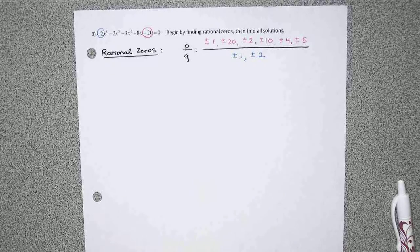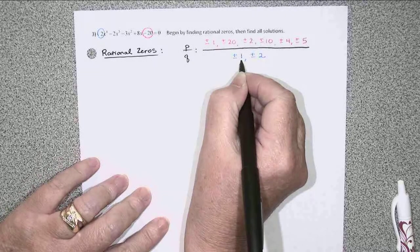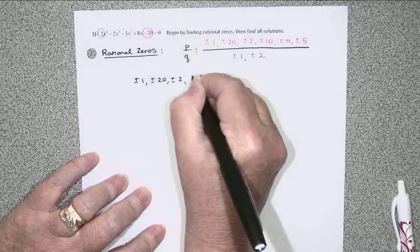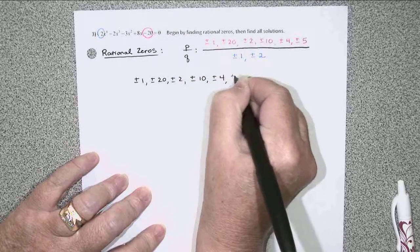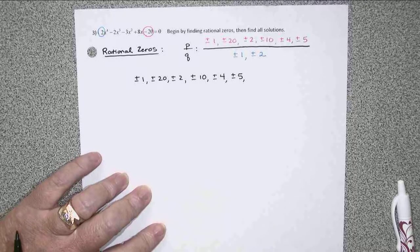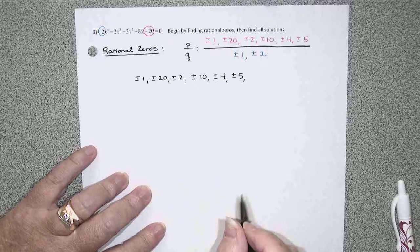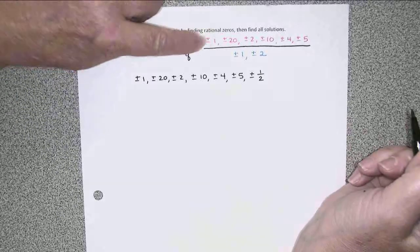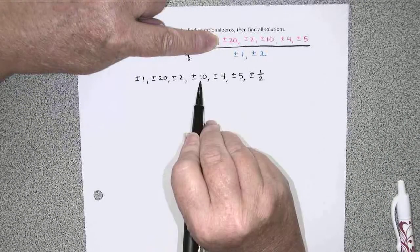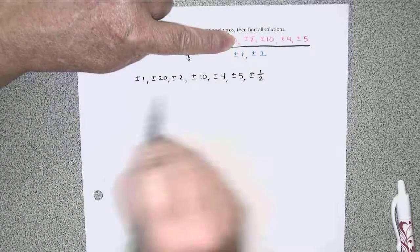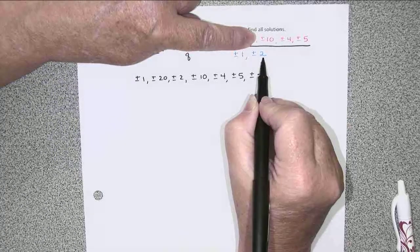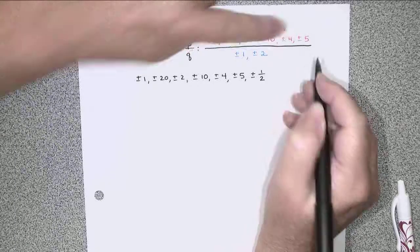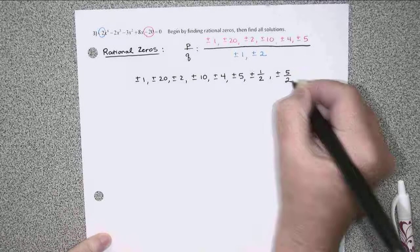So the candidates, the possible rational zeros, would look like dividing everything by 1 is going to leave it exactly the way it is. And then dividing everything by 2, we're going to get some repeats. When I do, I won't bother to list them again. So first of all, 1 divided by 2, that's not a repeat, plus or minus 1 half. 20 divided by 2 is 10, I've already got that in my list. 2 divided by 2 is 1, already got that. 10 divided by 2 is 5, already got that. 4 divided by 2 is 2, got that. And then finally, 5 divided by 2, we don't have yet. So plus or minus 5 halves.